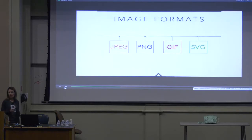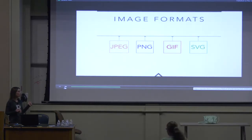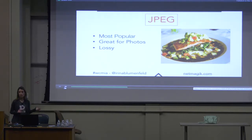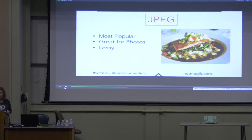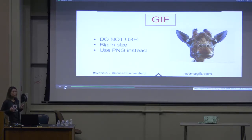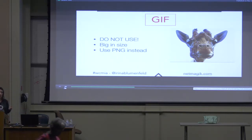We're going to talk about popular image formats used on the web right now: JPEG, PNG, GIF, and SVG. JPEG is the most popular one — it's used for photos with many colors, and it's a lossy format. GIF used to be more popular in the past; we used it for animations, but it's really big in size — do not use it. If you have an image that requires transparency, just use a PNG instead.